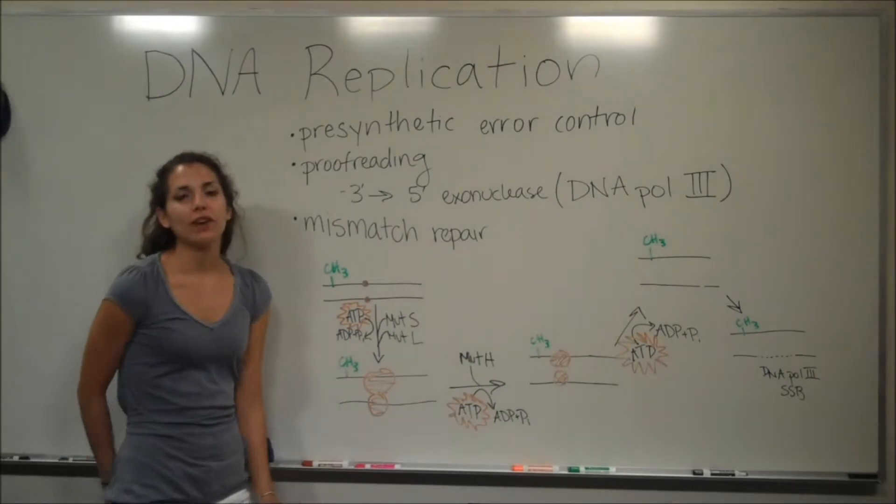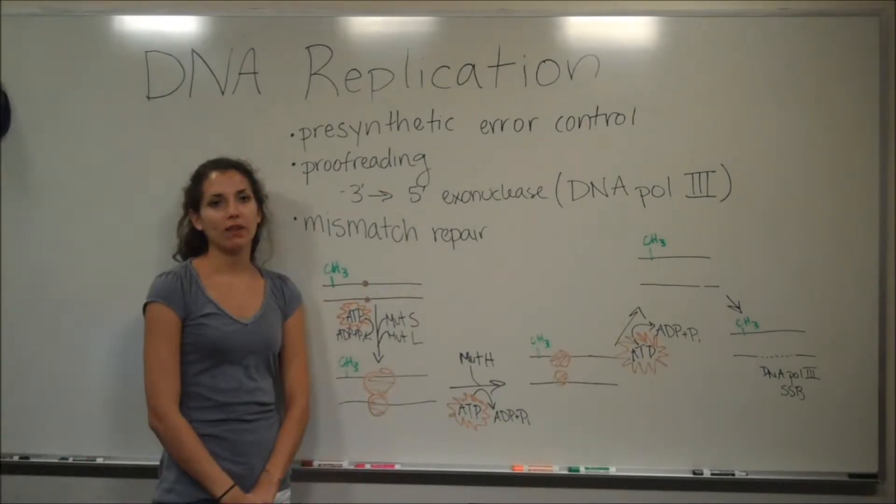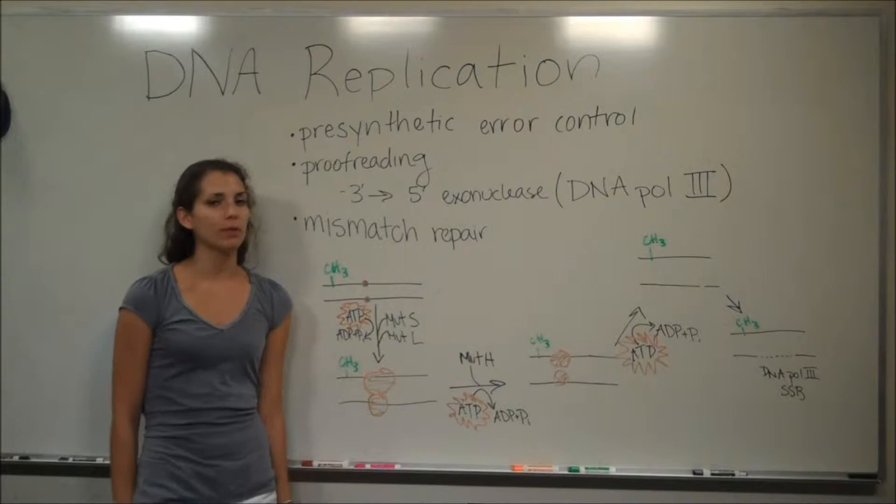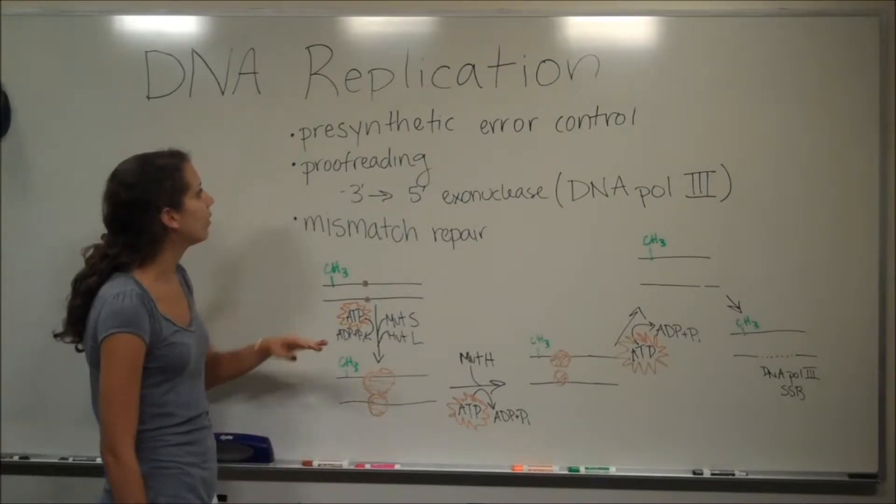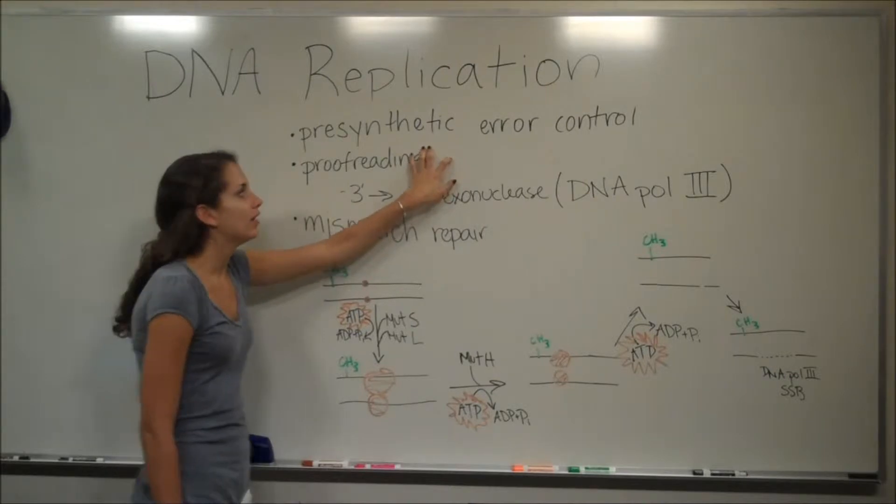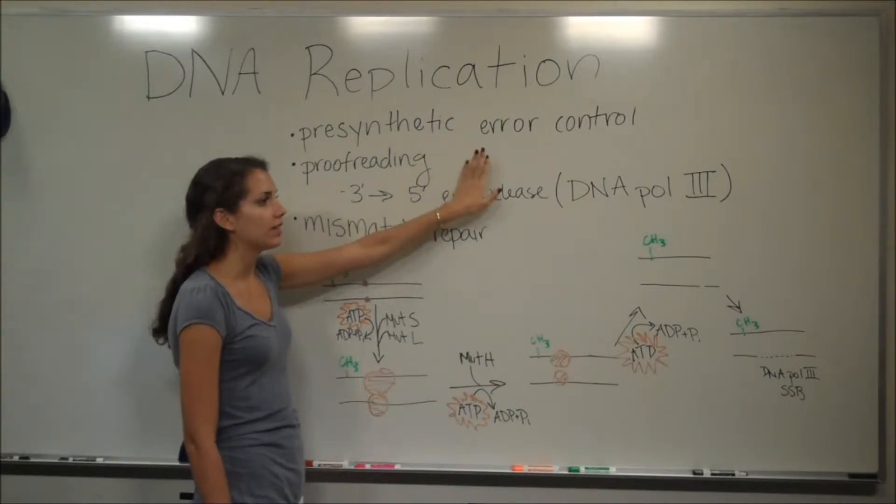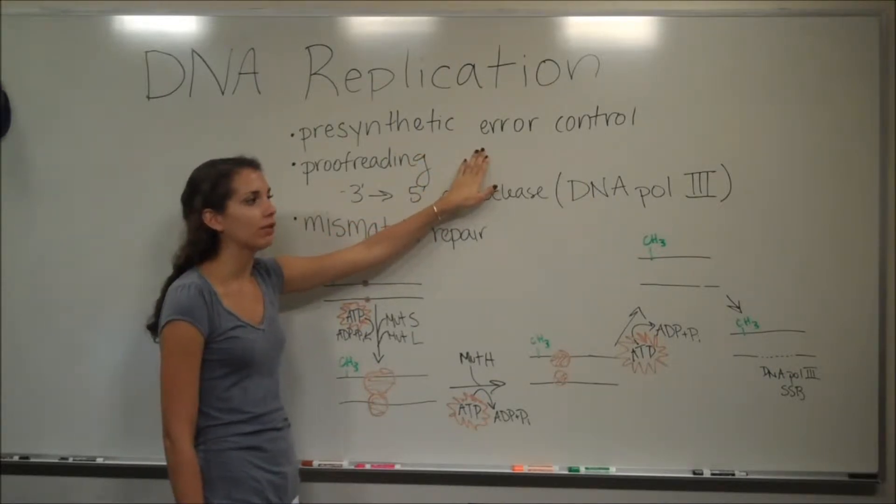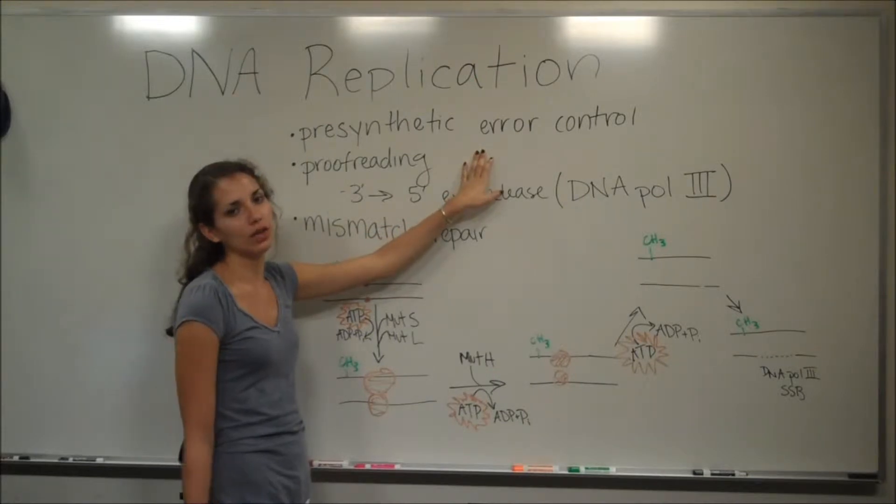Okay, so as you can imagine, it's very important that mistakes in DNA replication are minimized, and there are three ways that this happens. There's presynthetic error control, and this is basically when there's an enzyme that checks to make sure that the base is complementary to the parental strand before it is added to the three prime end. So I'm trying to catch it before it's added.